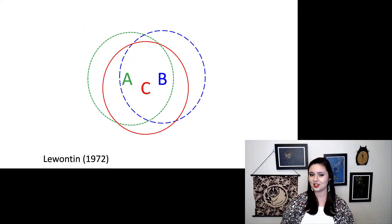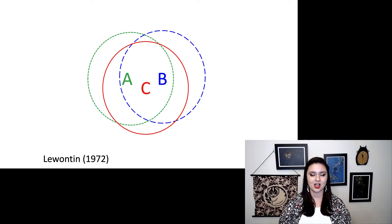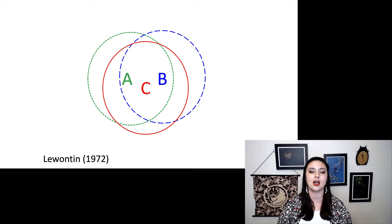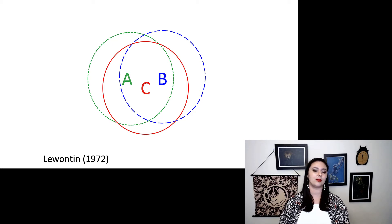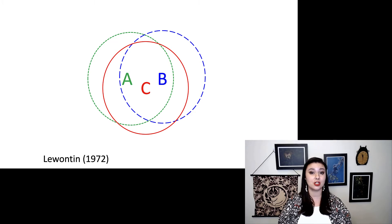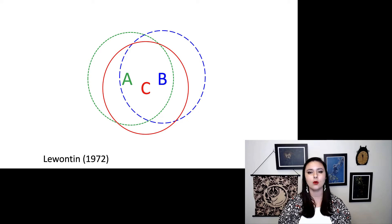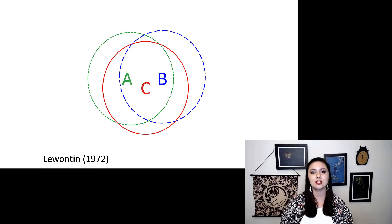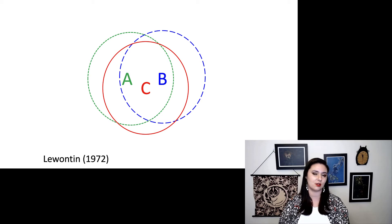In the 70s, Lewontin found this — the first data we have about genetic variants and how they appear in different human populations. As you can see, most genetic variation is shared amongst all human populations. So already, we are not fitting with either the assumptions from the typologist or the population geneticist view.